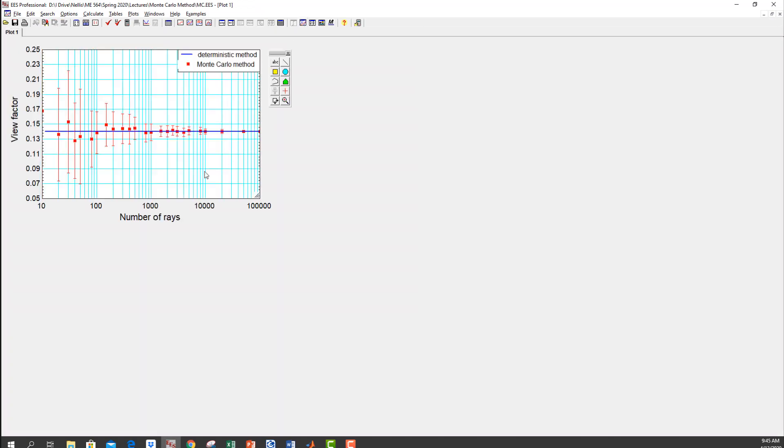So here's my output of that. This is the number of rays. The red dots are the mean value that I get each time I run it. And you can see that as I go to more and more rays, the mean value goes to some constant value. And then the error bars are the standard deviation, and you can see that they get smaller and smaller and smaller. So depending on what kind of accuracy I need, 10,000 to 100,000 is probably a good number.